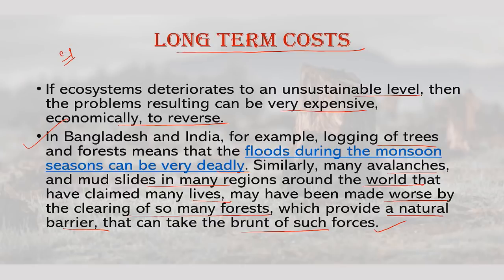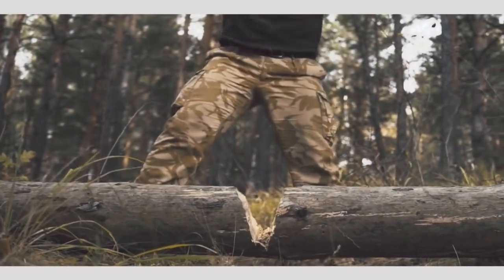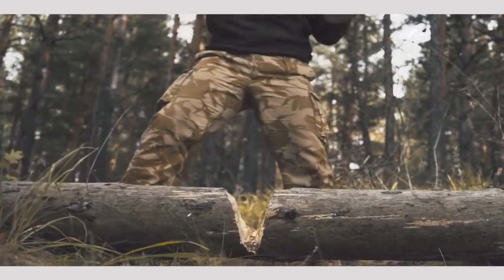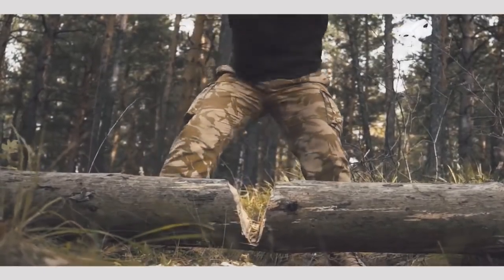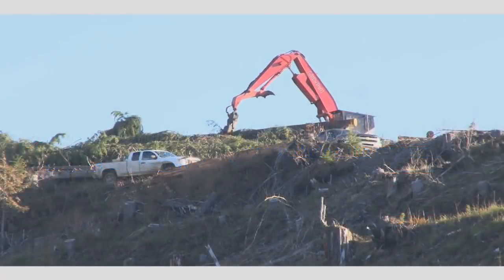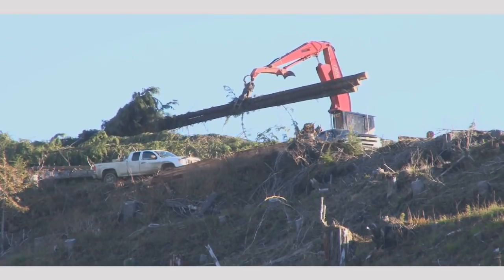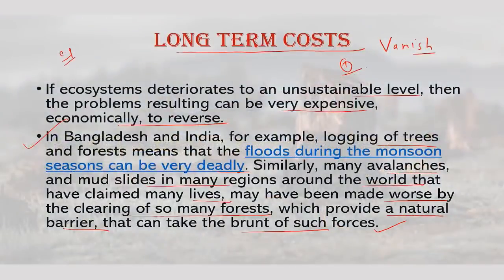Assuming an alarmist scenario: if enough trees, forests and related ecosystems vanish, the oxygen-producing benefits from such ecosystems is threatened. The atmosphere would suffer from more pollution, and the cost to tackle this and the related illness problems would be enormous. Other species in the ecosystem that depend on this would be further at risk, which would lead to a downward spiral of the ecosystem.